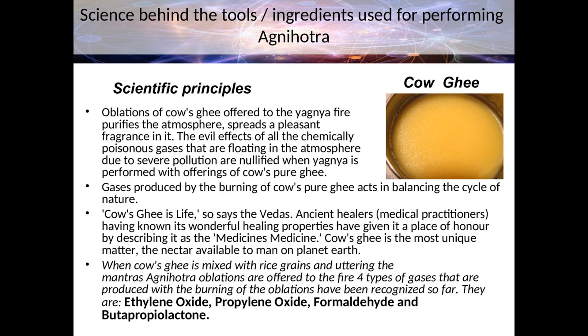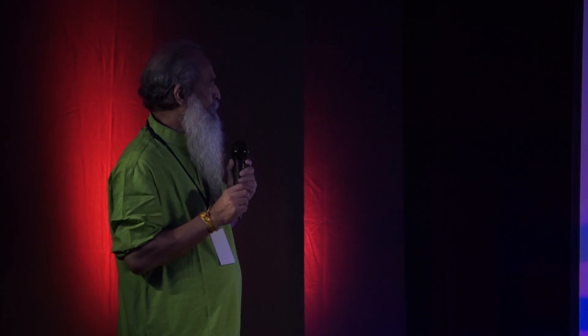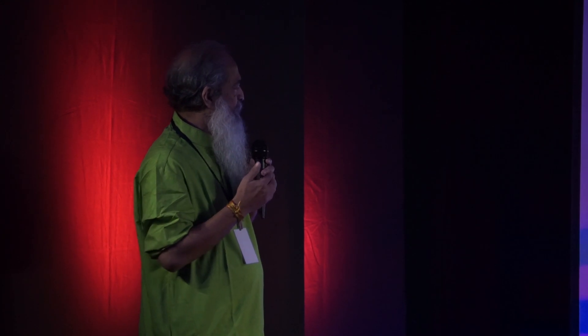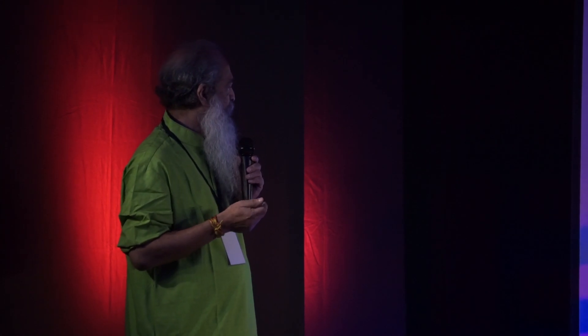Oblations of cow dung offered to the agni fire purify the atmosphere and spread pleasant fragrances in it. The evil effects of all chemically poisonous gases floating in the atmosphere due to severe pollution are nullified when Agnihotra is performed with offerings of cow dung and pure ghee. Cow's ghee is life, so say the Vedas. Ancient healers and medical practitioners, knowing its wonderful healing properties, described it as medicine's medicine. When cow's ghee is mixed with rice grains and offered to the fire with the utterance of mantras, four types of gases are produced: ethylene oxide, propylene oxide, formaldehyde, and butapropylactone.